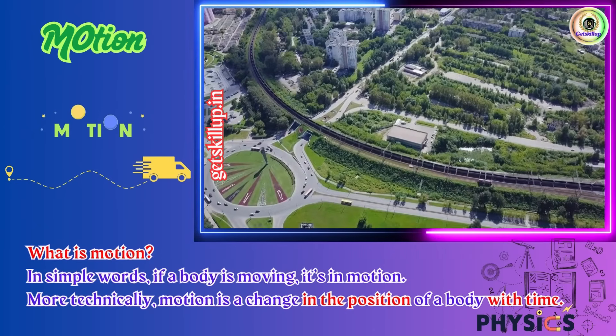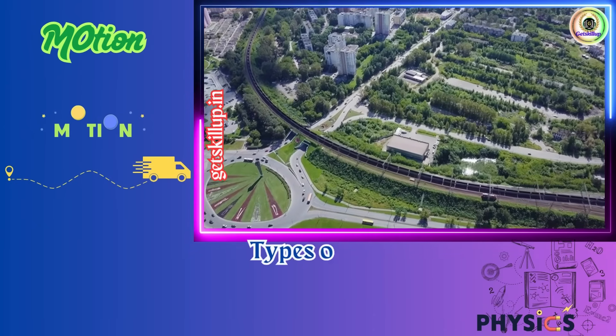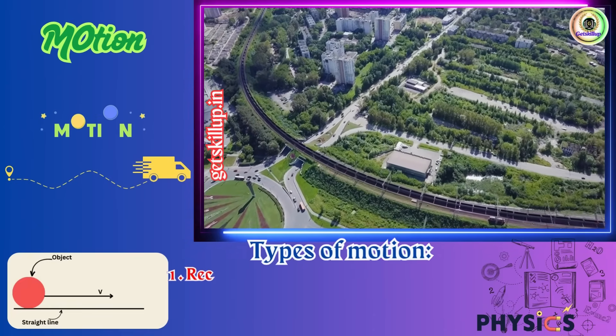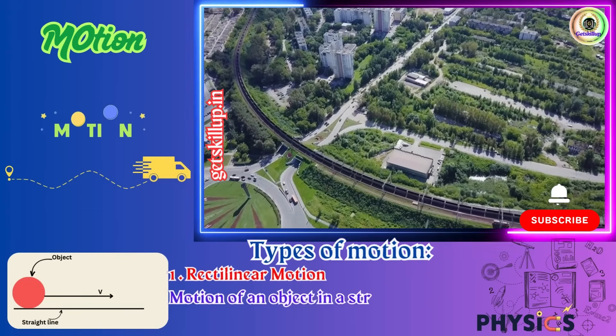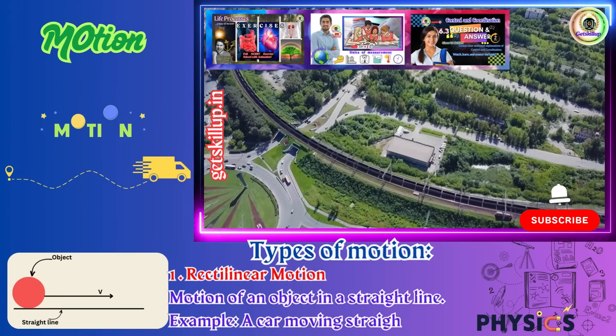Now, what are the types of motion? Mainly four types of motion. First, rectilinear motion, motion of an object in a straight line. Example, a car moving straight from A to B.